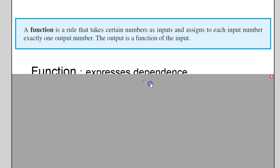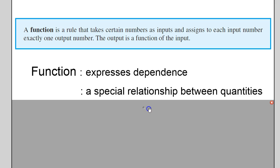So, a couple of things I want to point out. Basically, functions express dependence between quantities, and a function is a special relationship between quantities. There are certain quantities that have relationships between each other, but those relationships are not functions. We'll talk about at the end of the video how you can identify a function from just a relationship.